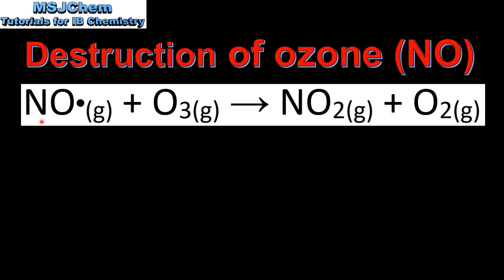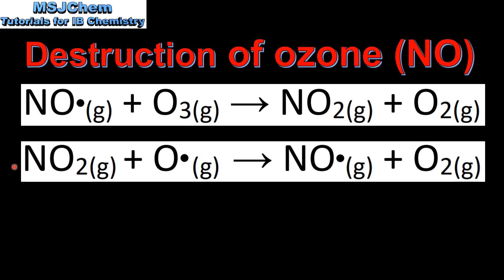In this equation we have nitrogen monoxide reacting with ozone to form nitrogen dioxide and an oxygen molecule. In the second equation we have nitrogen dioxide reacting with an oxygen radical to reform nitrogen monoxide and another oxygen molecule.